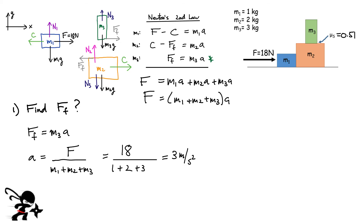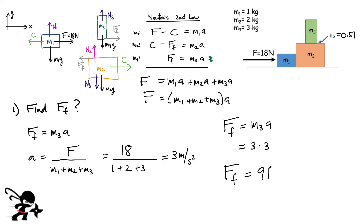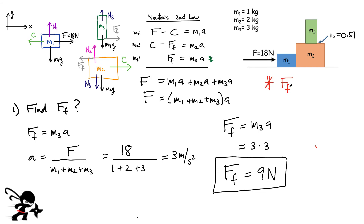Now I can go back and solve for the force of friction. The friction force is simply M3 multiplied by the acceleration: that's 3 kilograms times 3 meters per second squared, giving a friction force of 9 Newtons.